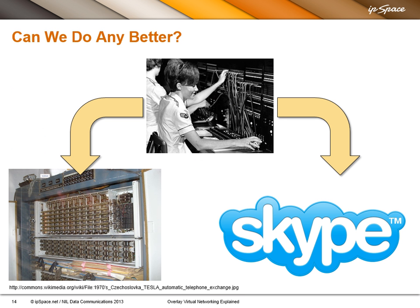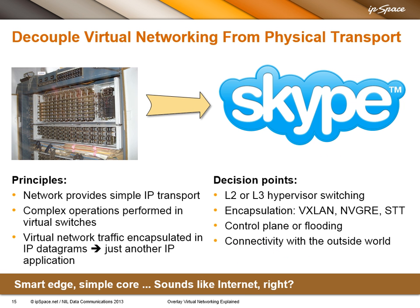I always use a voice analogy. We are moving from manual exchanges — this is a relay exchange from the 1970s on the left-hand side — and we can go to more and more complex exchanges, or we could move to Skype and just run virtual networks over IP, like Skype runs voice over IP. The physical network, like in voice over IP, should supply just simple IP transport. All the complex stuff should be performed in the end hosts — the virtual switches. All virtual traffic generated between VMs just becomes another IP application, like voice, like storage, like vMotion.